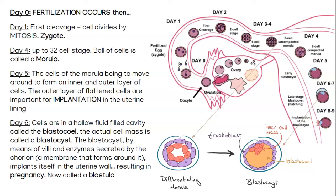By day five, our morula has moved around, formed some inner and outer layers, and started to kind of flatten itself because it's going to look to implant into the uterine lining, specifically the endometrium. On day six, we now have that morula moving into something called a blastocyst. The center of it — the blastocyst — has an inside called the blastocele, which is fluid-filled, and all of these cells along the outside are called the trophoblast.